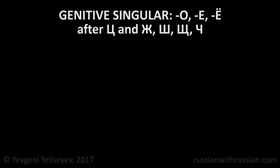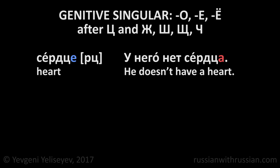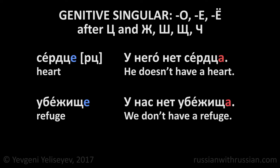After the letter Ц and after hushing sounds Ж, Ш, Щ, Ч: Сердце — heart. У него нет сердца. He doesn't have a heart. Убежище — refuge. У нас нет убежища. We don't have a refuge.